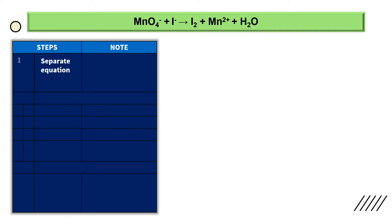First step: separate the equation. Before we separate this equation, we must ignore three species. The first one is H2O, the second one is H+, and the third one is OH⁻. So before we separate this equation, check first whether these three species appear in our equation. If we see H2O, we will ignore H2O.